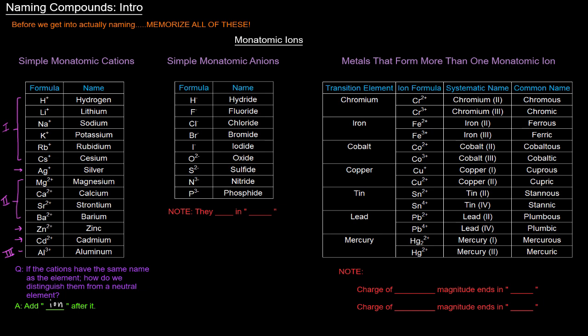Next up is the monatomic anions. So monatomic, again, one atom, anions, negative charge. So we've got these first few here have a minus one charge. Hydrogen, if it gains an electron, it becomes H-, so it has a minus one charge.